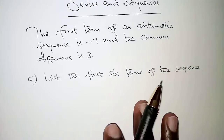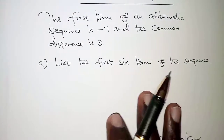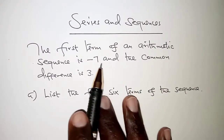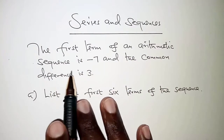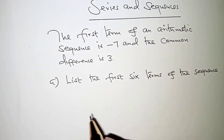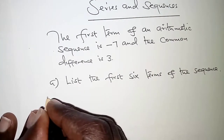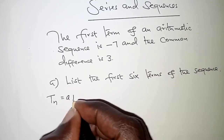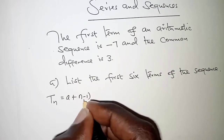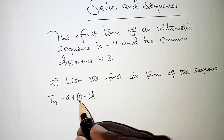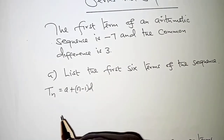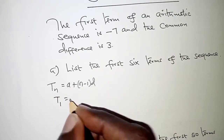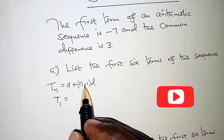Straight to the first part, we have to list the first six terms of the sequence. It is an arithmetic sequence, so we need to understand that the nth term of an arithmetic sequence is given as the first term plus n minus 1 times the common difference, where n represents the number of terms. So if n is 1, that is the first term, we have a plus 1 minus 1, which is 0 times d.